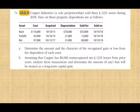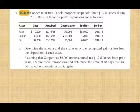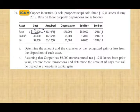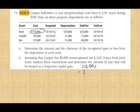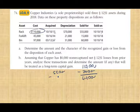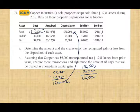Copper Industries sold three assets, all long-term. For the rack: cost $110,000, depreciation $70,000, basis is $40,000. Sold for $55,000. $55,000 minus $40,000 gives a gain of $15,000. Notice the gain is less than the depreciation of $70,000, so this is ordinary income of $15,000 due to Section 1245 recapture.